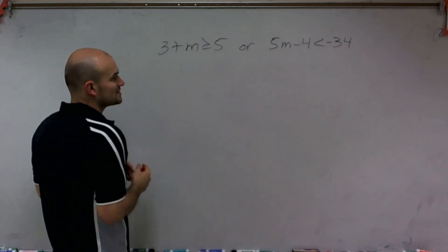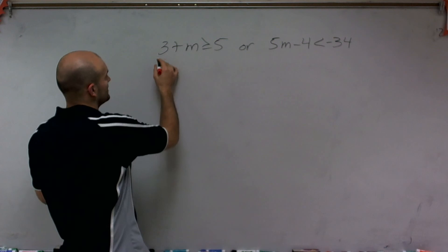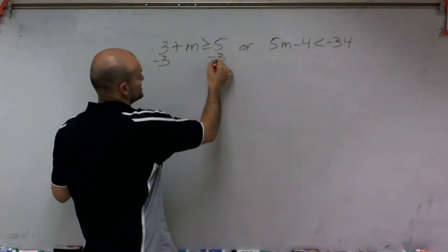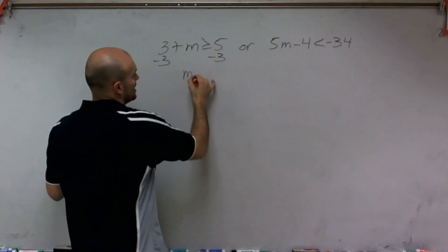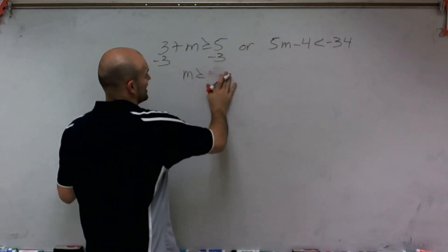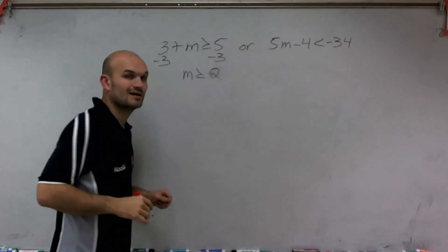So all you need to do is solve for your variables. So on this side, I'm simply just going to subtract 3 to the other side to isolate my m. And therefore, I have m is greater than or equal to not 5, but 5 minus 3, which is 2.